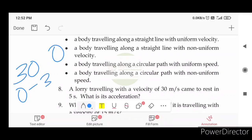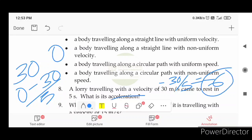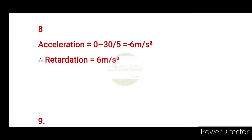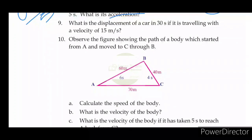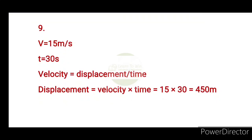The retardation is 6 meters per second squared. What is the displacement of a car in 30 seconds if it is traveling with a velocity of 15 meters per second? Displacement = velocity × time = 15 × 30 = 450 meters.